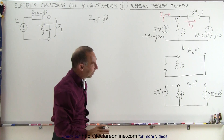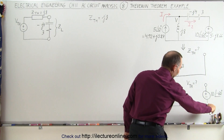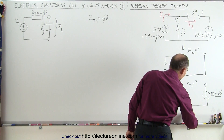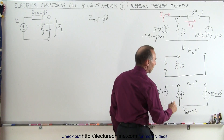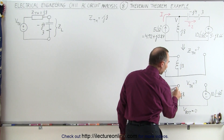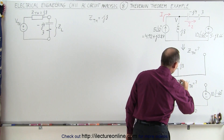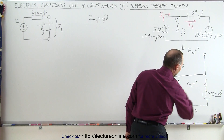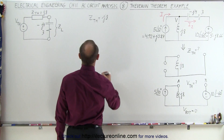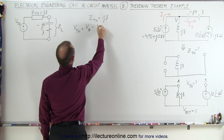Now the Thevenin voltage — that's not quite as easy as the Thevenin impedance, but still not bad. Let's take the bottom portion of the circuit as the reference voltage and call it equal to zero. Now if we're trying to find the voltage between these two terminals, we take the voltage at this point and subtract from that the voltage at this other point — the voltage between A and B, basically.